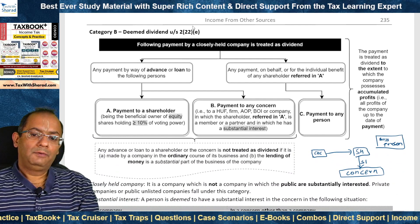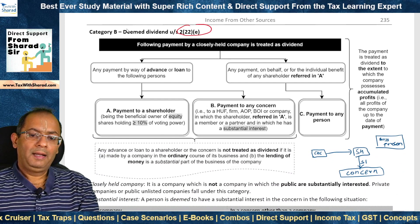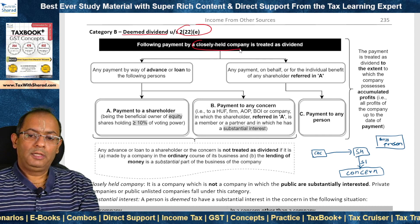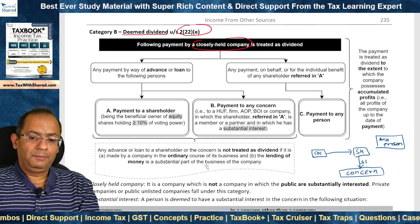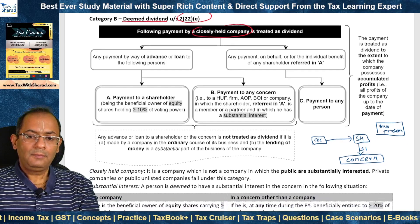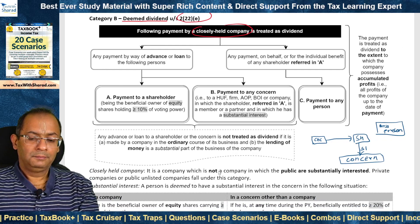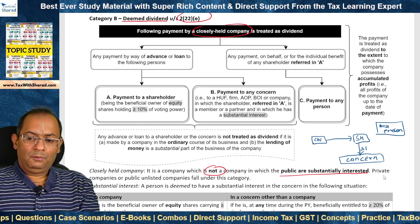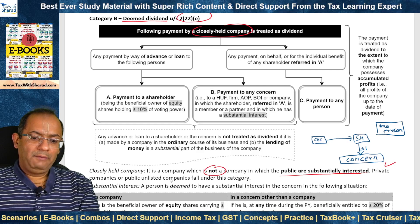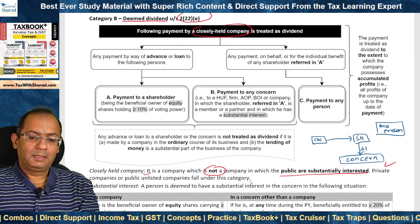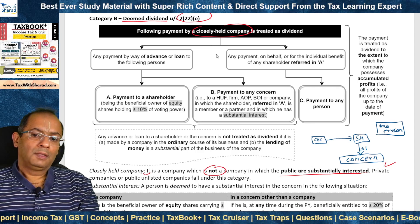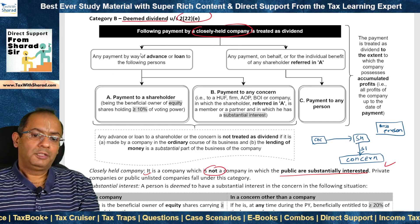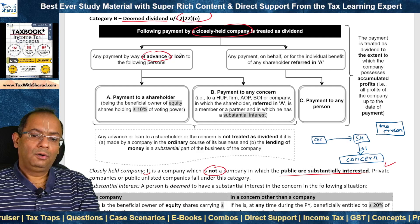Category B is covered by Section 2(22)(e) and is referred to as deemed dividend. It covers payments made by a closely held company (CHC). A closely held company is one which is not a widely held company — in other words, it is not a company in which the public are substantially interested. Private companies or public unlisted companies fall under the category of closely held company. Three kinds of payments are covered: (a), (b), (c). First, any payment by way of advance or loan.